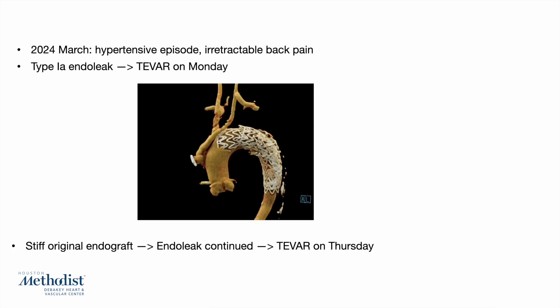Fast forward to March of 2024: the patient presented with intractable pain after a hypertensive episode and was evaluated at Houston Methodist ER. Imaging and symptoms confirmed a type 1a endoleak, and the patient underwent urgent T-VAR. Unfortunately, the formerly placed stent graft did not allow the overlaid graft to fully expand despite ballooning, so the endoleak continued.